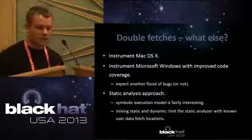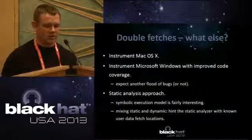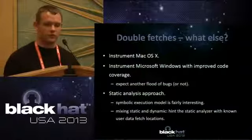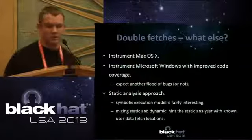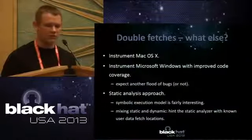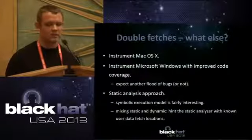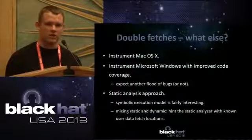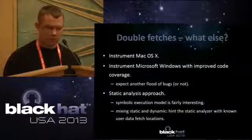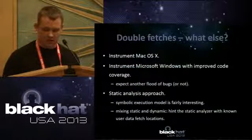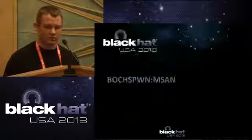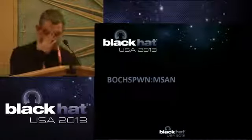When it comes to double fetches, there are other things we can do: improve coverage for Windows, and try a static analysis approach instead of purely dynamic analysis. Symbolic execution is very interesting for that. We could also mix static and dynamic analysis by hinting the static analyzer with information from the dynamic runs — specifically where instructions are that we know for sure are fetching data from user mode. This potentially has much greater coverage because we're not limited to code that actually executes.